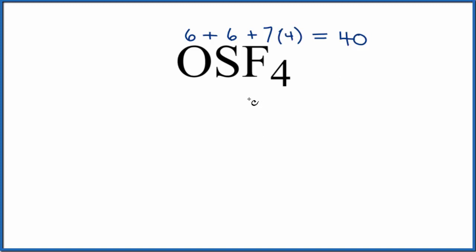So let's put the least electronegative element in the center, that's the sulfur. Put the sulfur here, we'll put the oxygen on top, and then the fluorines will just spread out around it.